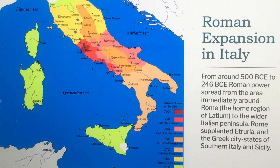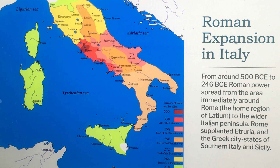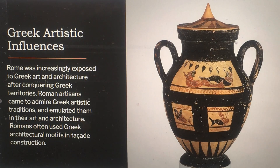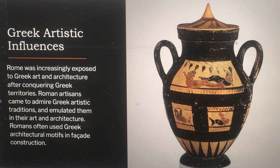From around 500 BCE to 246 BCE, Roman power spread from the area around Rome — the region of Latinum — to the wider Italian peninsula. Rome supplanted Etruria and the Greek city-states of southern Italy and Sicily. Rome was increasingly exposed to Greek art and architecture after conquering Greek territories, and Roman artisans came to admire Greek artistic traditions, emulating them in their art and architecture, often using Greek architectural motifs in facade construction.